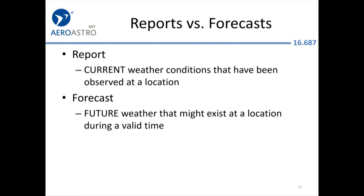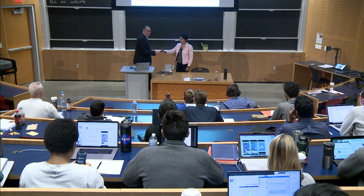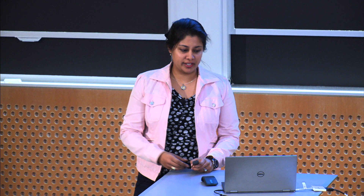Now Tina will talk about the exciting world of actual weather data. We're going to talk about weather data in the form of reports as well as forecasts. What is the difference between a report and a forecast? A report is telling you what's actually happening — the current weather condition at a particular location. A forecast is a guess as to what is going to happen. It's really important to know the difference between these.